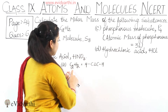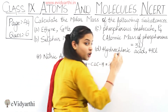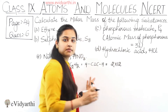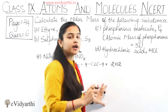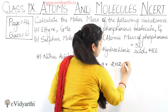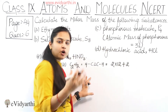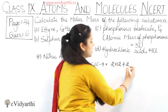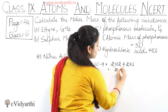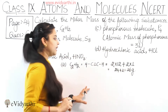Let's start with part A — ethyne, which is C2H2. How many carbon atoms are there? 2 carbon atoms. The atomic mass of carbon is 12, because carbon's atomic number is 6, so atomic mass is 12. There are also 2 hydrogen atoms and hydrogen's atomic mass is 1. So: 2×12 + 2×1 = 24 + 2 = 26 grams. That is the molar mass of ethyne.